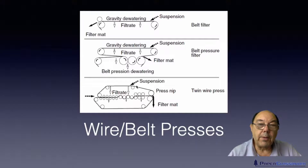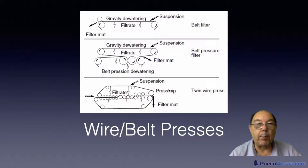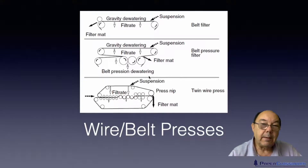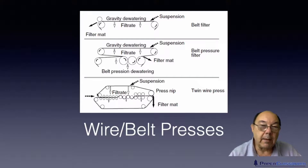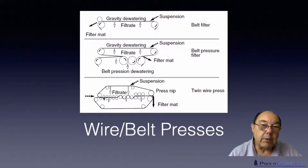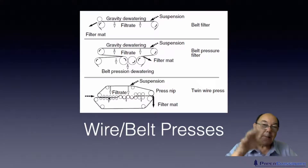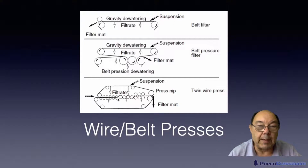The third evolution was a twin wire press, almost like a twin wire paper machine. Again you deposit the suspension on top of the top wire, it de-waters by gravity, and coming around at this point it's joined by the second wire, and you've got rolls on each side of the two wires squeezing all the water out as best you can.